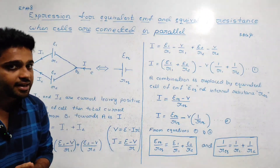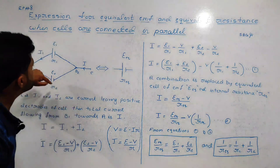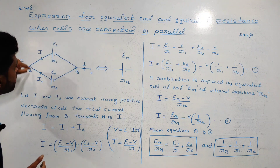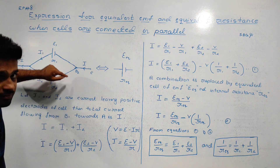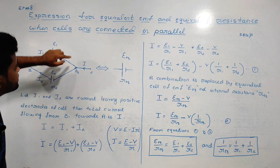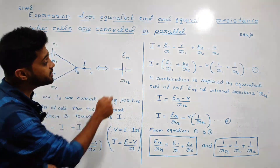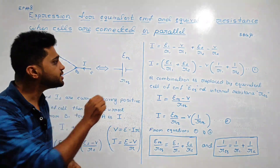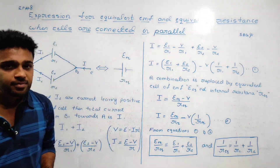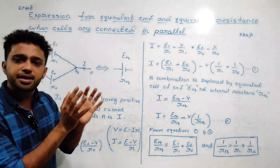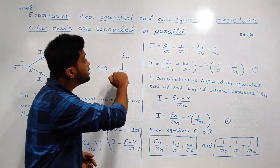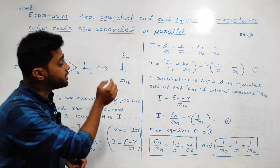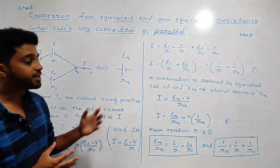This combination is replaced by an equivalent cell. The equivalent cell will combine the two cells. The equivalent cell has EMF — symbol epsilon or E_eq — and internal resistance R_eq. Let me start the derivation.